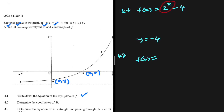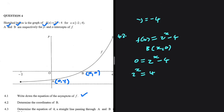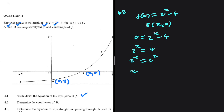f of x equals 2 to the power of x minus 4. If we substitute the coordinates of b, setting y equal to 0 to find x, we get 0 equals 2 to the power of x minus 4. Taking minus 4 to the left-hand side, 2 to the power of x equals 4, which we can write as 2 to the power of 2. So x equals 2, and the coordinates of b are (2, 0).